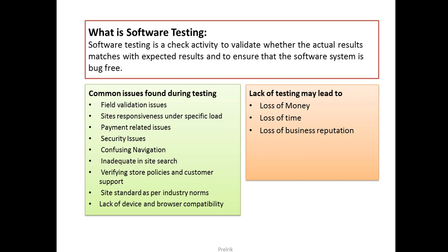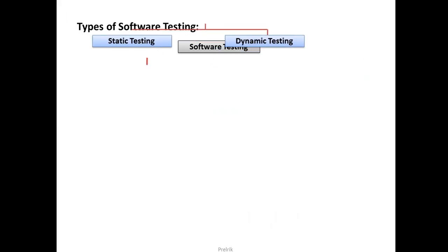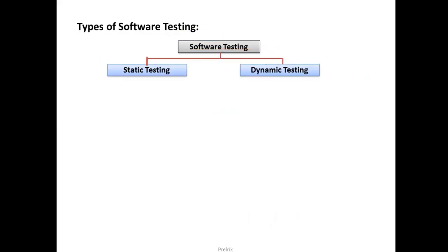These are the basics about software testing. Now let's see how many testing types exist in the market that companies use. Most people say there are two types — black box and white box — which is fairly true. But in depth, there are two broader types: static and dynamic testing, and black box and white box come later.